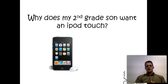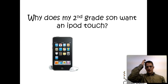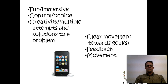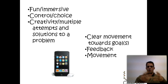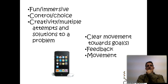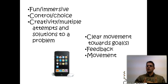We can also look at other models and ask ourselves: why does my second-grade son want an iPod touch? If you ask him, he'll say things like: I'm having fun with it, I can get lost in it when I play with my friends, it gives me control and choice, I get to be creative, multiple attempts at solutions to a problem. In teacher's terms, he's saying: I get clear movement towards a goal, feedback, and I get to move around. These types of answers match what meta-analysis says works best in our classrooms, but we tend not to focus on those until we take a hard look at what kids would rather do.